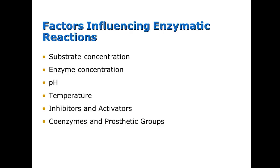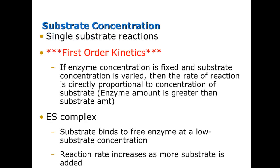For the reaction to happen, certain things must fall into place. We have to have a specific substrate concentration and a specific enzyme concentration. Enzymes are very finicky with pH and temperature. We also have inhibitors and activators that influence the enzymatic reaction, and there can be coenzymes and prosthetic groups involved as well.